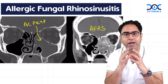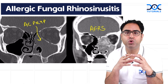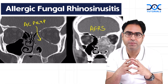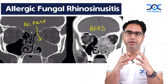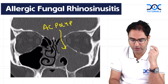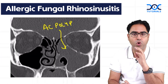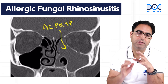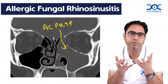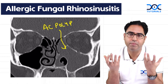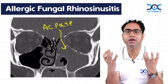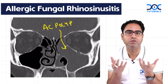In the antrochoanal polyp, which is a usual polyp — the non-fungal inflammatory polyp — the CT scan picture will be homogeneous. If you see this picture, this is a homogeneous picture, because the antrochoanal polyp or even the ethmoidal polyp, which are inflammatory polypi,